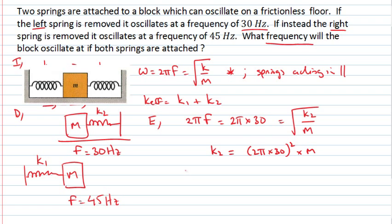I can now look at the oscillating frequency if I remove the right-hand spring. It's 2π times 45 Hz. That has to be equal to the square root of k1 over m. That's this scenario here. Rearranging that, I get k1 is now equal to 2π times 45 all squared, also multiplied by the mass.